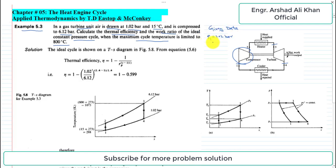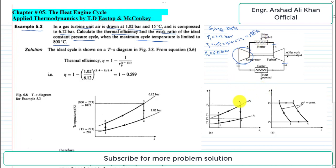The inlet condition to the compressor: P1 is 1.02 bar, and temperature T1 is 15 degrees centigrade. Converting to Kelvin, 15 plus 273 gives 288 Kelvin. The exit pressure after compression is P2 equal to 6.12 bar. The maximum temperature in the cycle is T3 equal to 800 degrees centigrade.